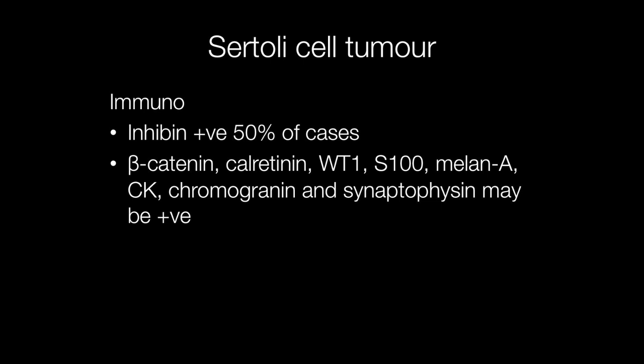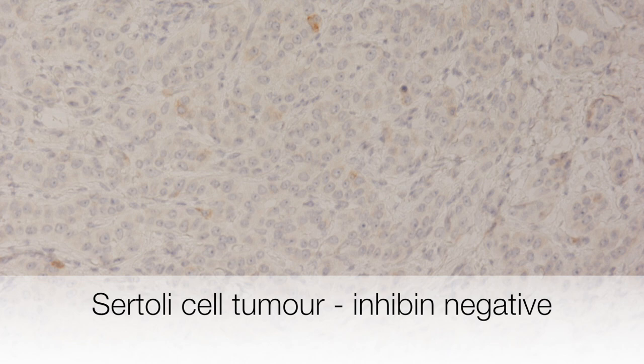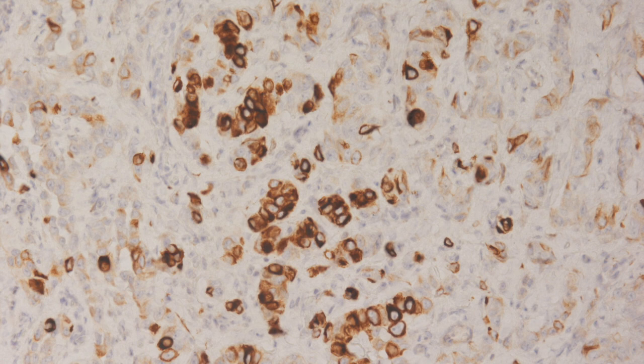Immunohistochemical characteristics include inhibin positivity in around 50% of cases. Beta-catenin, calretinin, WT1, S100, melan-A, cytokeratin, chromogranin and synaptophysin may also be positive. This Sertoli cell tumour has been stained for inhibin and is negative, but this same tumour shows strong positive staining with AE1/AE3.